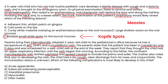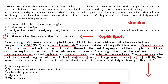The confluent maculopapular rash started cephalad and spread caudad to include the palms and soles. The child also had a dry cough, clear nasal discharge, and conjunctivitis — the three C's — with unknown immunization status. This clearly describes measles, with the cephalocaudal rash distribution. The most common complication is otitis media, which would be choice E.